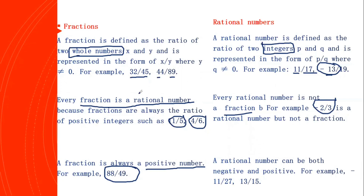To conclude: in fractions, the numerator and denominator should be whole numbers, whereas in rational numbers the numerator and denominator are integers. Fractions are always positive numbers, whereas rational numbers can be positive or negative. I hope you all have understood the main difference between fractions and rational numbers. If you have, I request you to subscribe to my channel and share it with students who are in need of this. Thank you all.